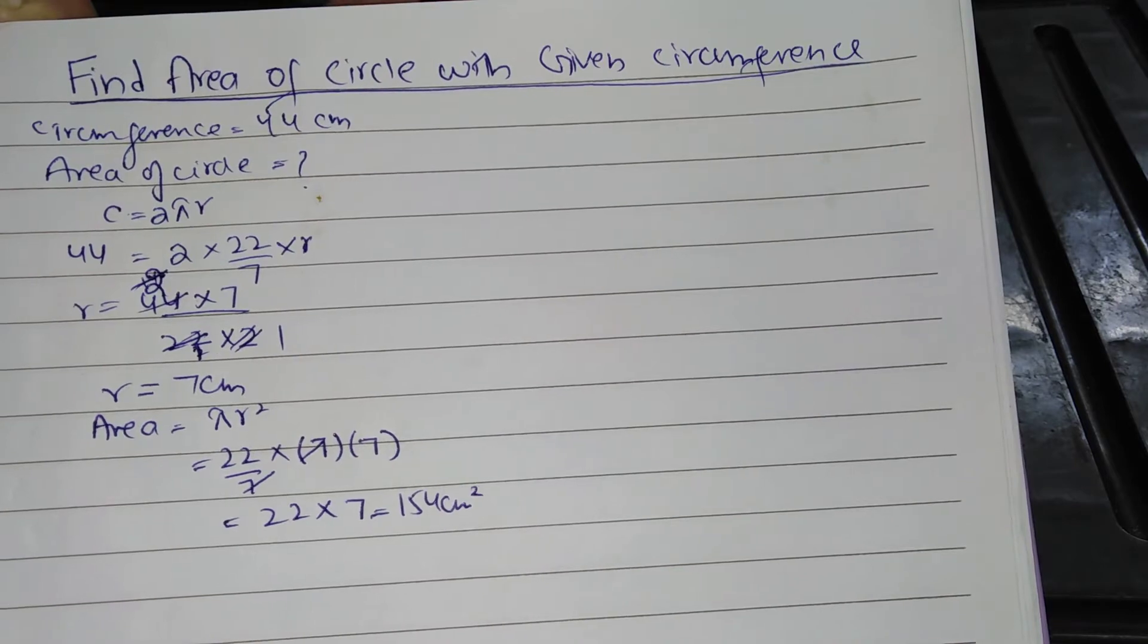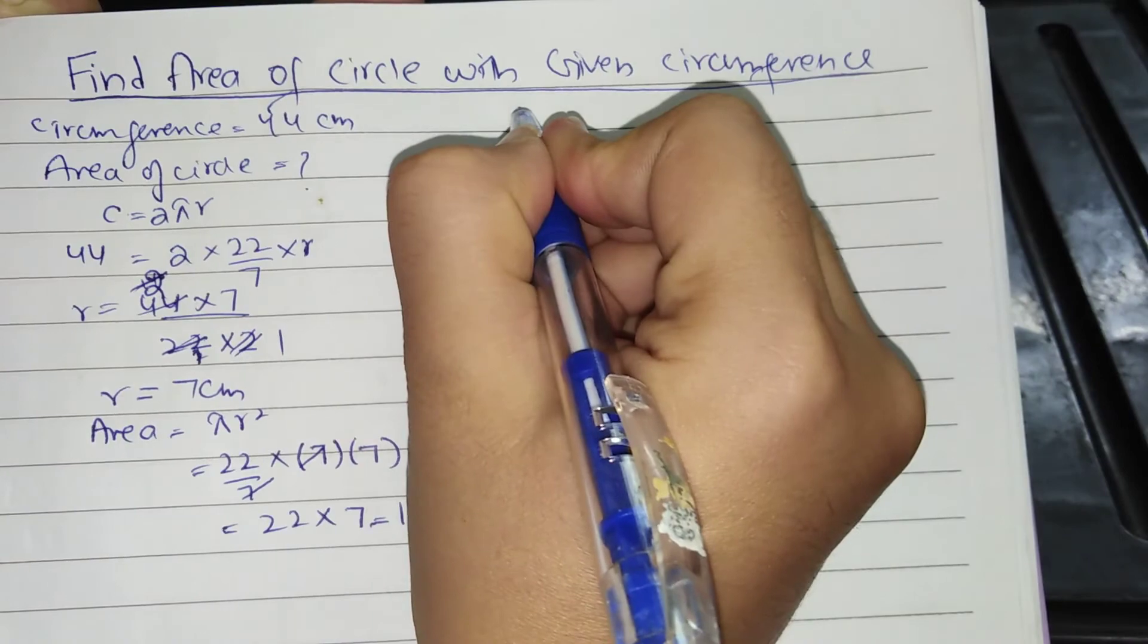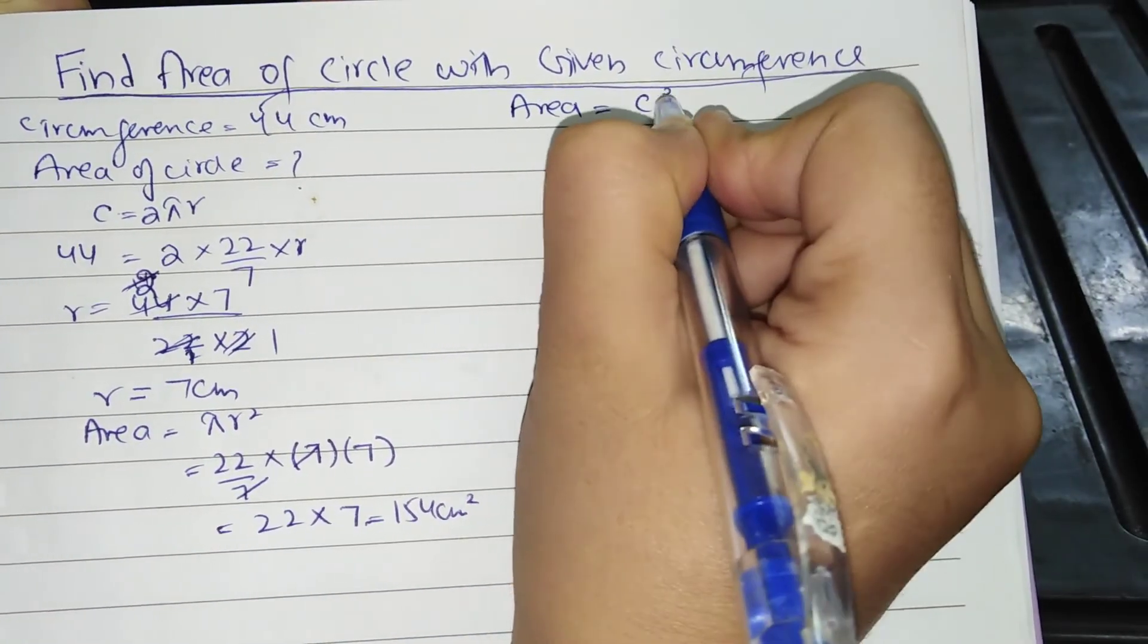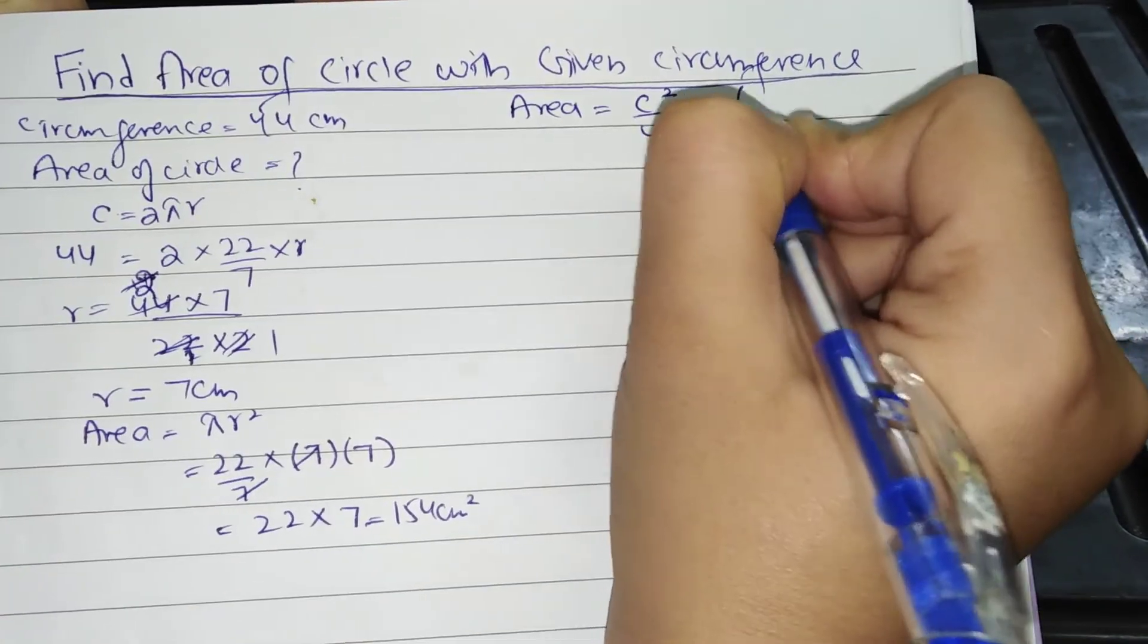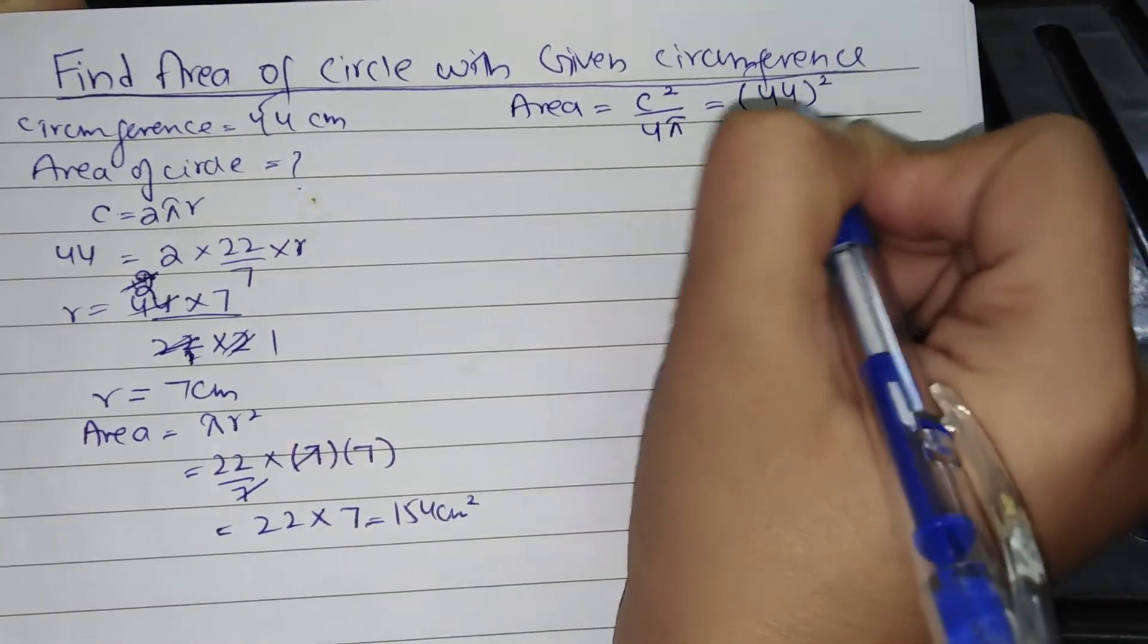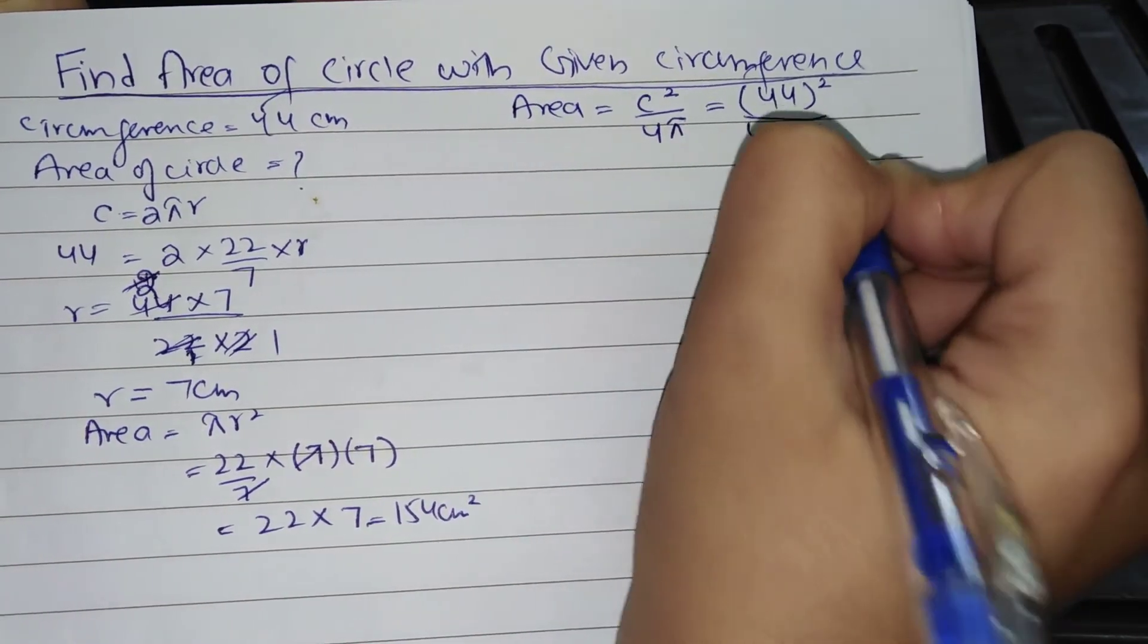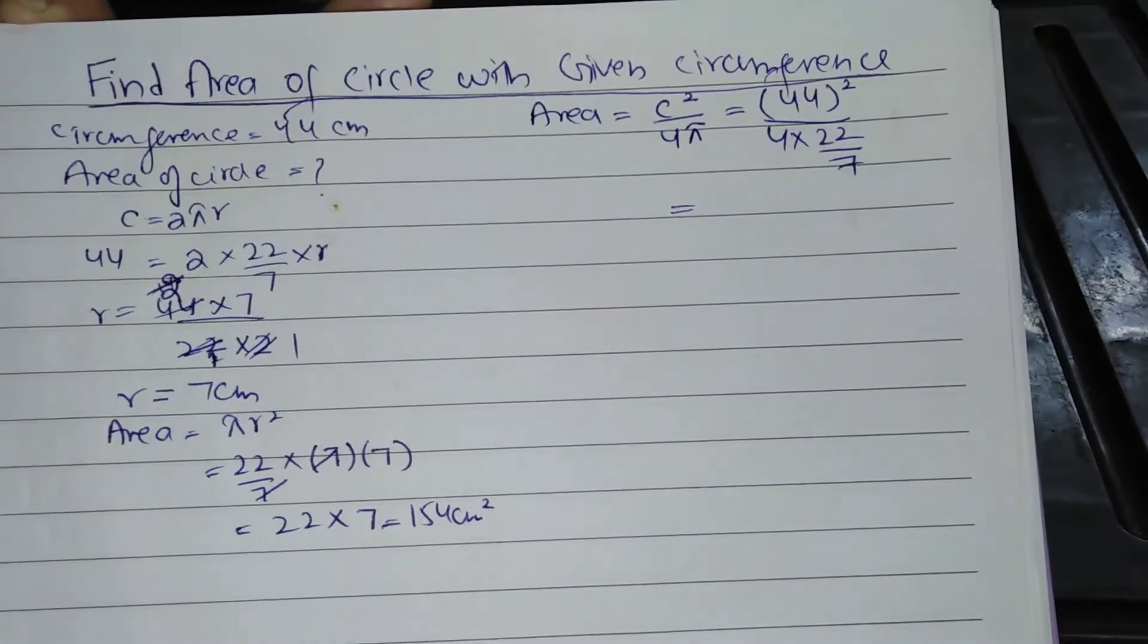Must remember for the short trick: area is equal to C² by 4π. So what is C? C is 44. 44 square divided by 4 into 22 by 7. In the short trick method, for squaring, we have discussed how to find the square of two-digit numbers and three-digit numbers, so link is mentioned in the description. Must check that.